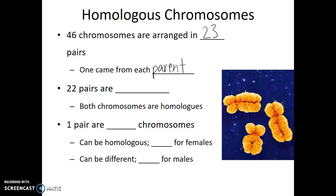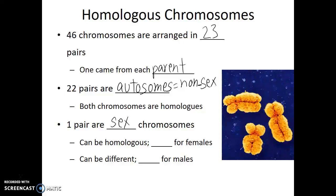22 out of those 23 chromosome pairs are known as autosomes — the non-sex chromosomes — and they are not involved in determining biological sex. One of those pairs are the sex chromosomes. The 22 autosomes are always homologous, meaning they're chromosomes of the same size with the same number and order of genes. The sex chromosomes may be homologous — that's the case for females, who have two copies of the X chromosome — or they may be different, as in males, who have one X and one Y chromosome.